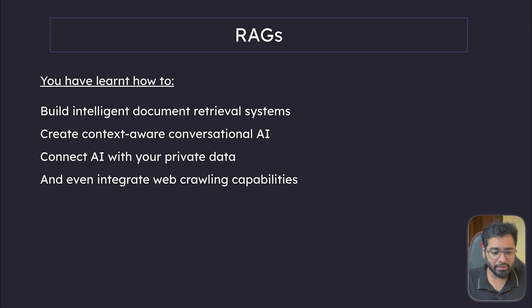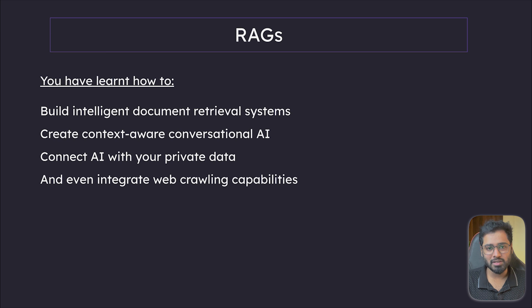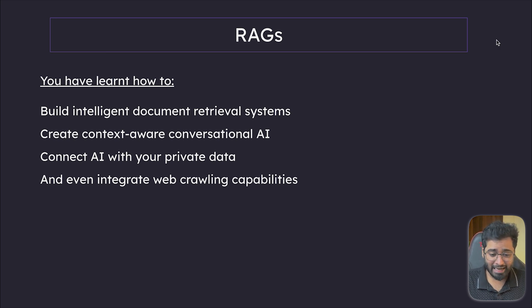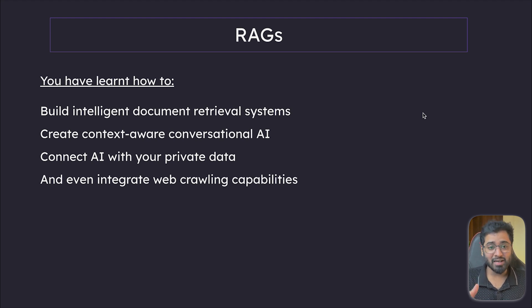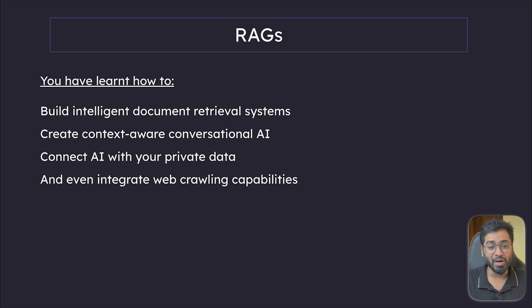We're not done yet. Up next, we're going to dive into the fifth and final component of LangChain called agents and tools. This is where it gets really interesting — imagine giving your AI the ability to actually use tools and make decisions like an actual human being. So if that excites you, we're going to be exploring that in the next section. I'll see you there.